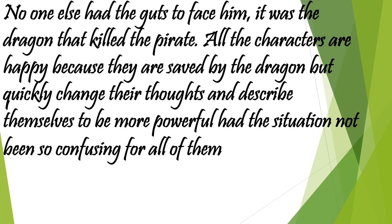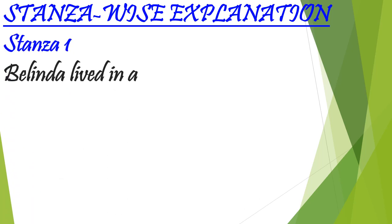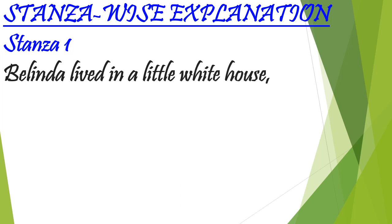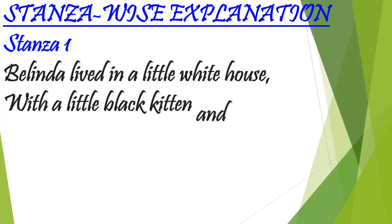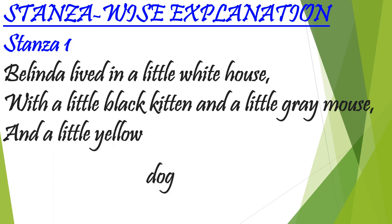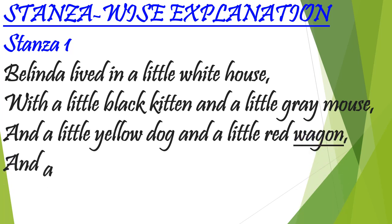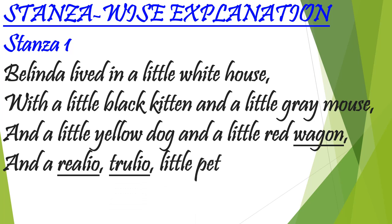They were all happy because they were saved and helped by the dragon. But later on, they quickly changed their thoughts and described themselves as more powerful, saying they would have been stronger if the situation had not been so confusing. They thought they were more powerful than Custard the dragon. Now, stanza-wise explanation. First stanza: 'Belinda lived in a little white house, with a little black kitten and a little grey mouse, and a little yellow dog and a realio, trulio, little pet dragon.'